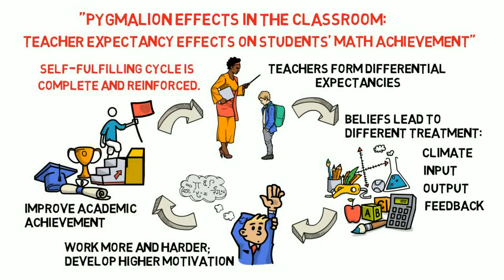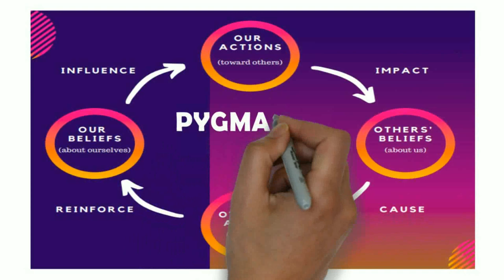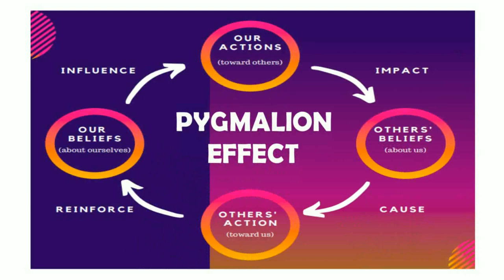These points of the self-fulfilling prophecy, or the Pygmalion effect, can simply be illustrated by this diagram. Our beliefs about ourselves influence our actions toward others, and these actions impact others' beliefs about us, which cause others' actions toward us, and eventually reinforce our beliefs about ourselves. And the cycle goes on and on.